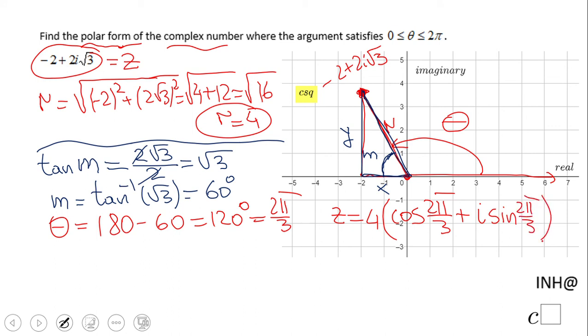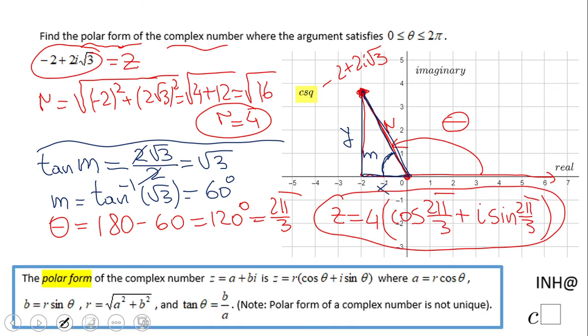And that's it. I put a summary of this problem right here. You can see it, and I put a note here: polar form of a complex number is not unique. You can write more polar forms of the same complex number, but that's the one we're looking for because the argument satisfies this condition.